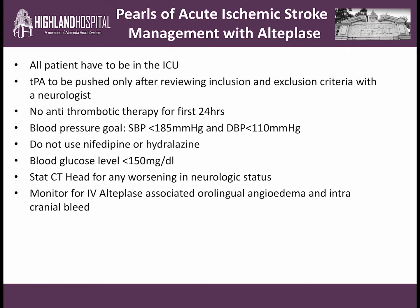Pearls for acute ischemic stroke management with alteplase: all patients must be in the ICU. TPA is to be pushed only after reviewing inclusion and exclusion criteria with a neurologist. Please do not give any anti-thrombotic therapy for the first 24 hours. The blood pressure goal is a systolic blood pressure of less than 185 mmHg and a diastolic blood pressure of less than 110 mmHg — both thresholds must be met, not one or the other. Do not use nifedipine or hydralazine, as it can actually worsen ischemia. The goal blood glucose level should be less than 150 mg/dL. Any change in neurologic status should warrant a stat head CT. The two side effects to monitor for with IV alteplase are orolingual angioedema and intracranial bleed.